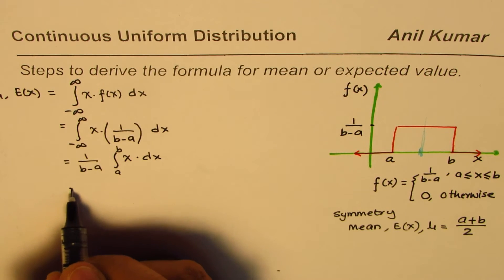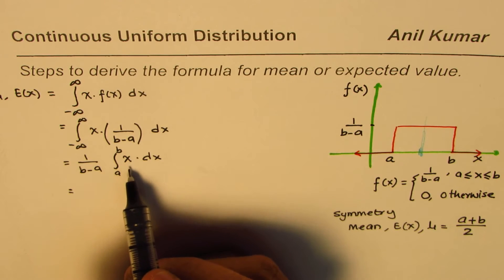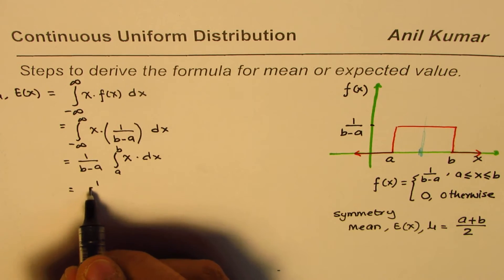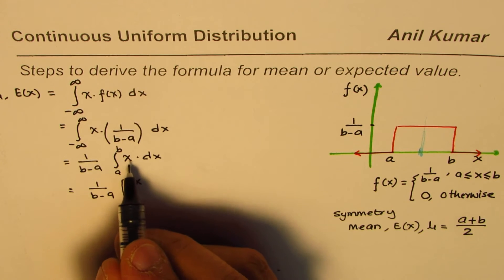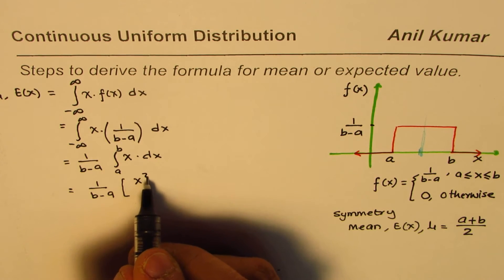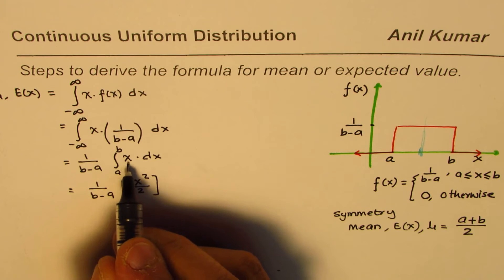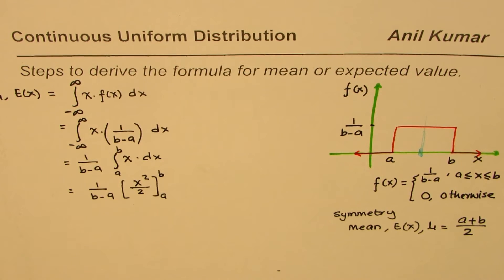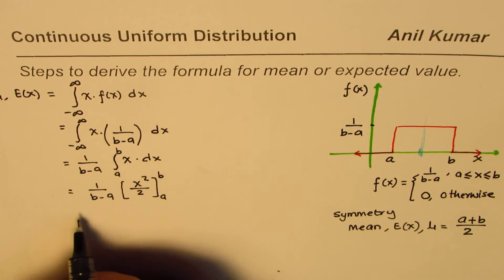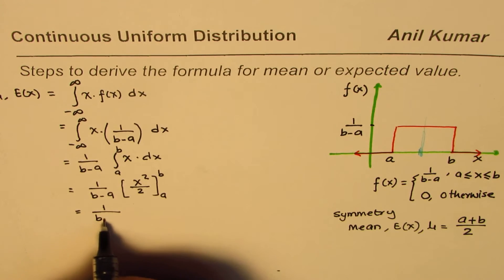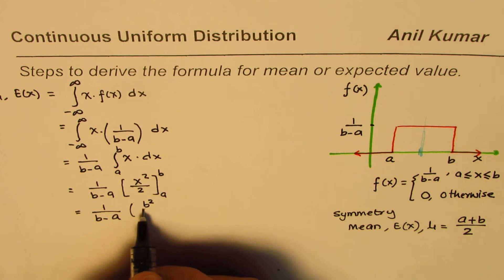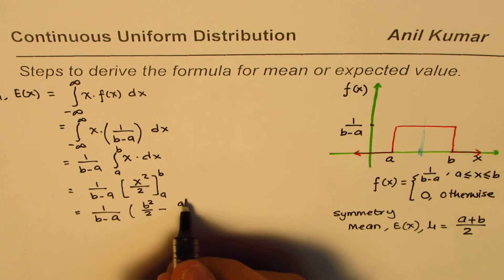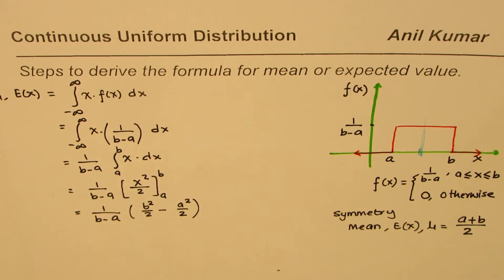The integration formula for x to the power of n is x to the power of n plus 1 divided by n plus 1. So applying this, we get 1 over b minus a times x squared over 2, evaluated from a to b. Substituting, we get b squared over 2 minus a squared over 2.